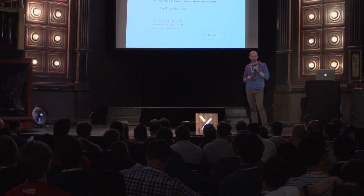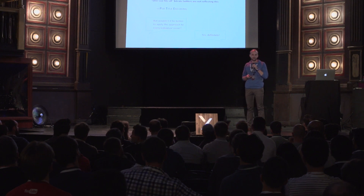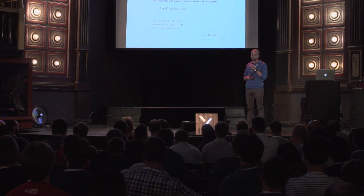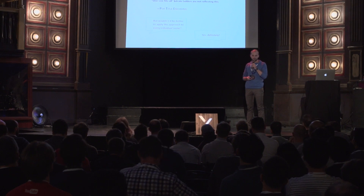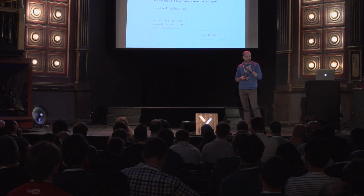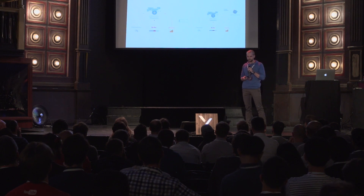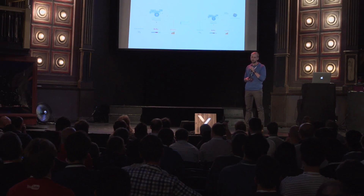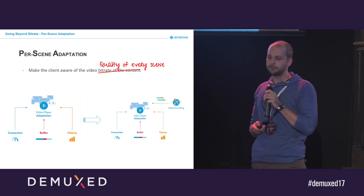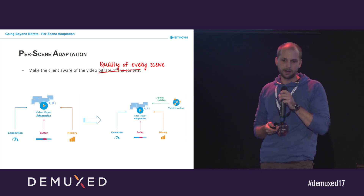At this point, I want to refer back to this morning where Mark talked about color mapping done on a per-scene level rather than a per-video approach. In this context, we ask: wouldn't it be better to apply per-title encoding to every individual scene? I definitely think it would be. That's why we introduced what we call per-scene adaptation — not just making the client aware of the video bitrate, but making it aware of the quality of every single scene.